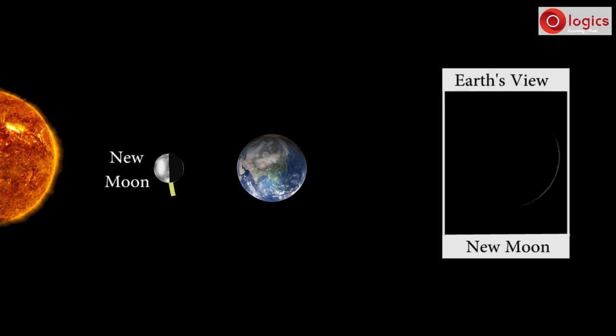As Moon orbits and reaches this region, at this position, a very small brighter side of Moon is visible. So Moon appears like this for people of Earth. This phase of Moon is called Waxing Crescent.